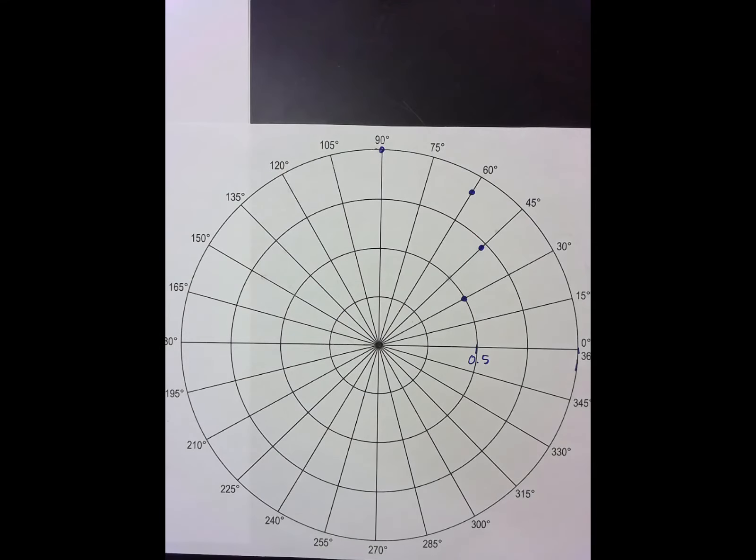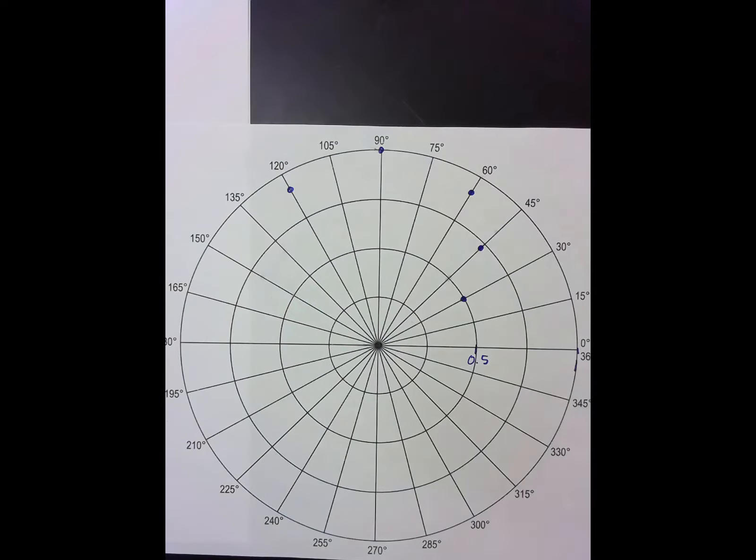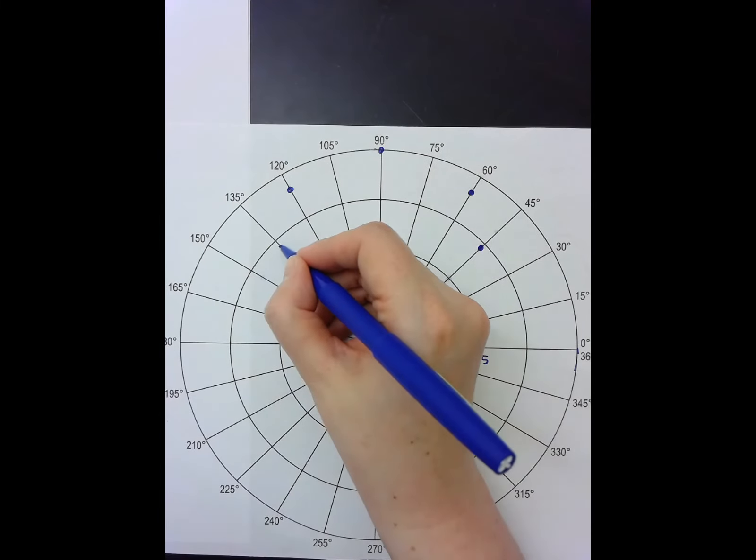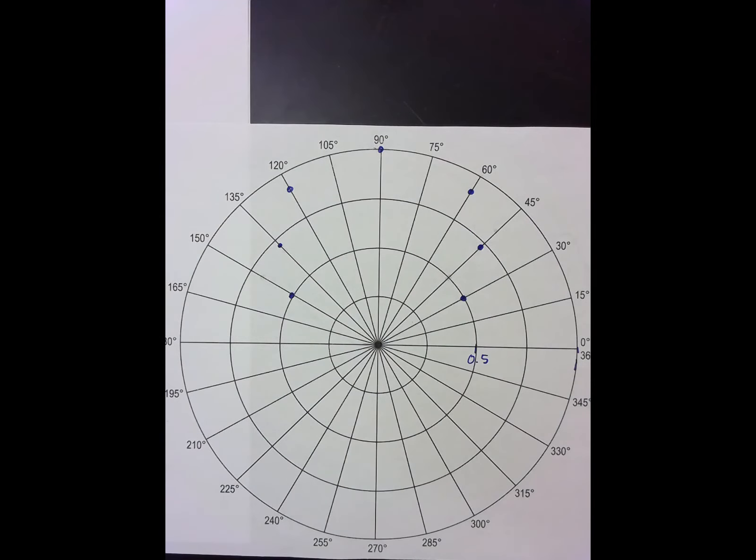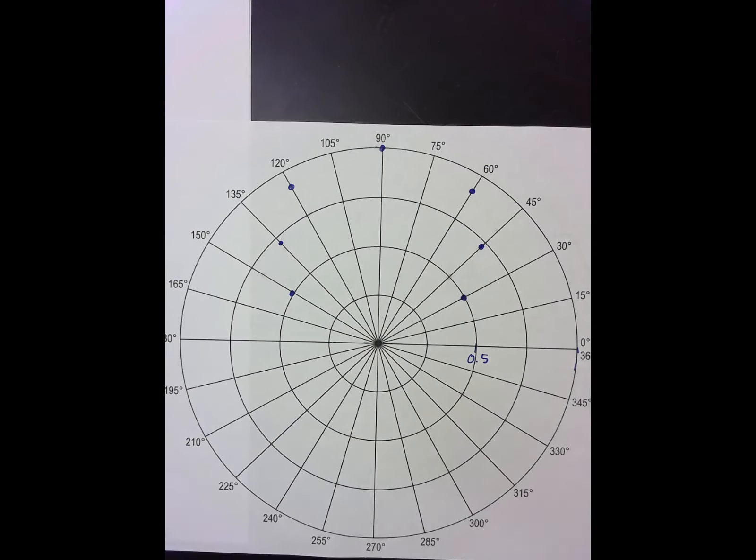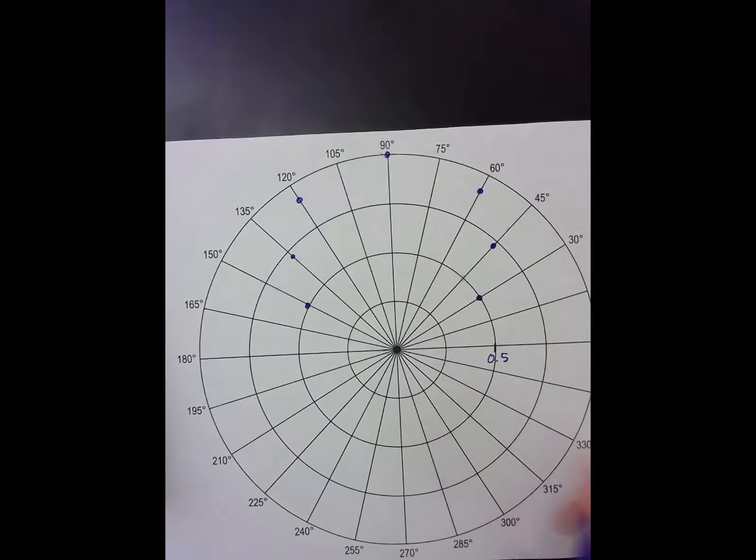Then I come back down again. 120 degrees is 0.87, 135 is 0.71, 150 is—whoops, sorry, I messed this up. This should be 0. 180 is back to 0.